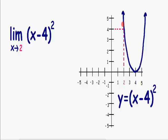So when we approached x equals 2 from the right and left hand side, our y value is equal to 4. So we know that this limit as x approaches 2 is equal to 4.